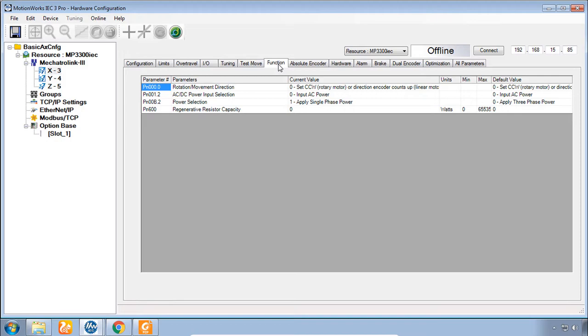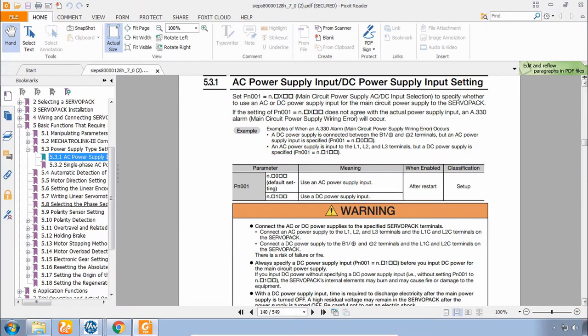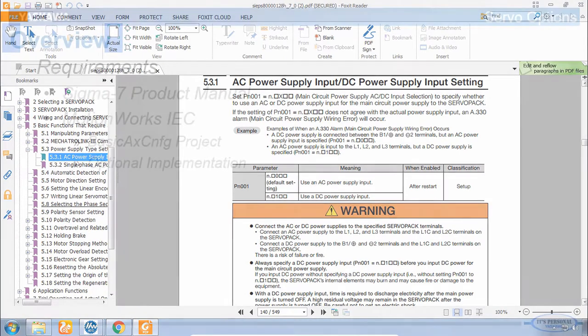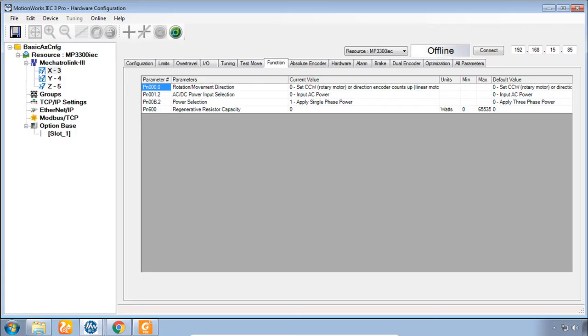We would like you to be aware of these features, identify when each feature is used, and be able to use the manual to find the parameters involved when a particular feature is required. For this part of the training course you will need the Sigma-7 product manual, which I'll show you how to download next. It will also be beneficial for you to have your MotionWorks IEC project open from the previous video, this project we called Basic Axe Config, and it's ok to stay offline for this entire video.